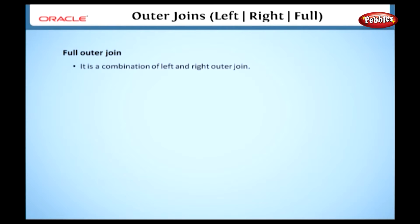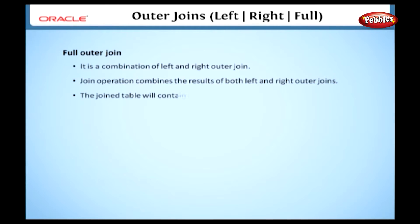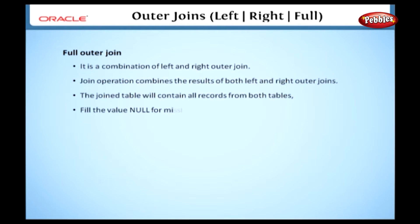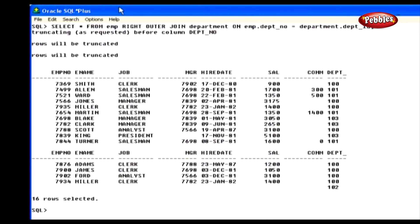And finally, we will see the full outer join. It is a combination of the left and right outer join. In this type, the join operation combines the results of both left and right outer joins. The joined table will contain all the records from both tables and fill the value null for missing matches on either side.